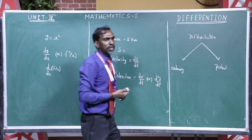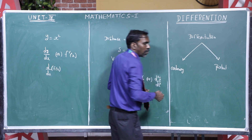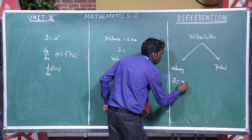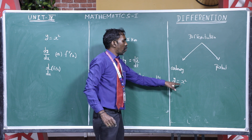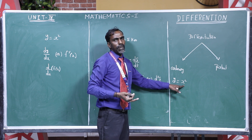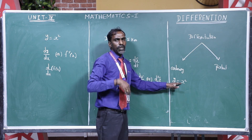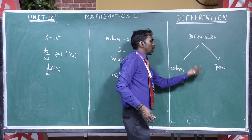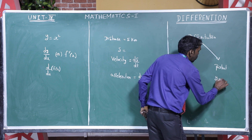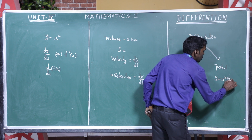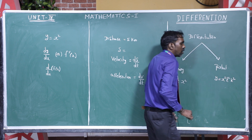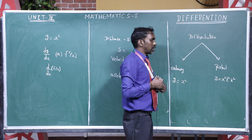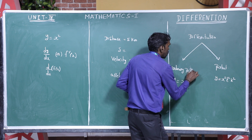What is the difference between ordinary and partial? Ordinary means the function has only one independent variable — for example, y equal to x square has only one independent variable x. So we differentiate with respect to x. This is called ordinary differentiation.